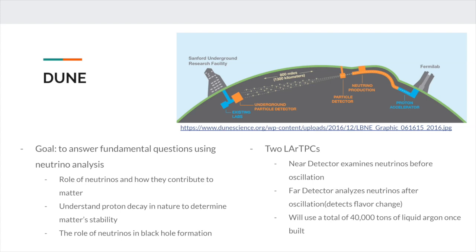Once finished, there will be 2 LAR-TPCs located underground: one to take images of neutrinos as they are produced by an accelerator, and a second LAR-TPC that will take images of the neutrinos after they have traveled 800 miles underground, in order to determine changes in flavor for neutrino oscillation. In total, 40,000 tons of liquid argon will be used for these LAR-TPCs, which is much larger than any LAR-TPC in existence.